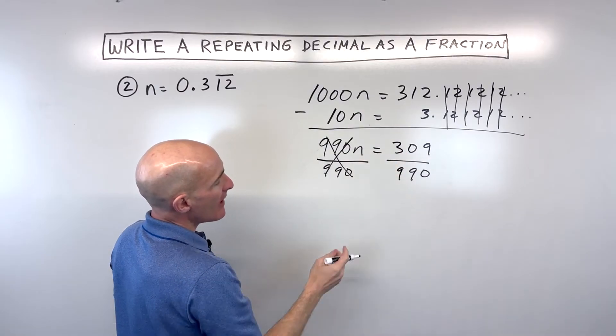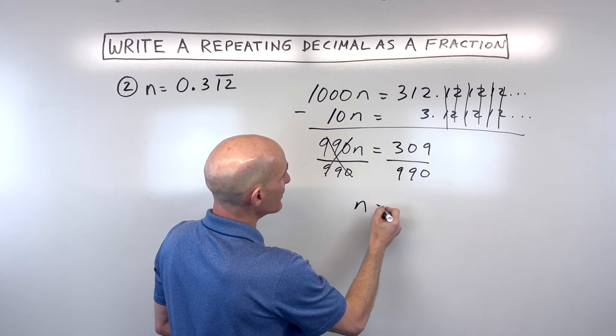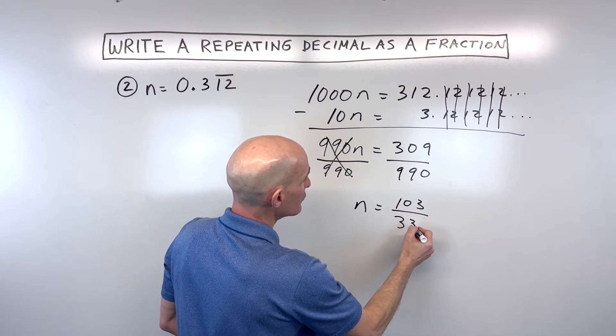And we can reduce this down a little bit. It looks like 3 goes into both the numerator and denominator. So this would come out to 103 divided by 330.